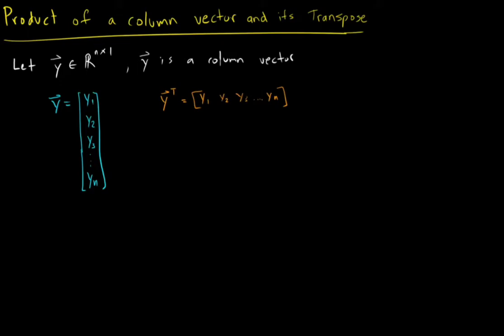Now if we want to multiply these two vectors, we would get the following. Notice we are allowed to multiply them in this way because the y vector is n by 1 and its transpose is 1 by n.